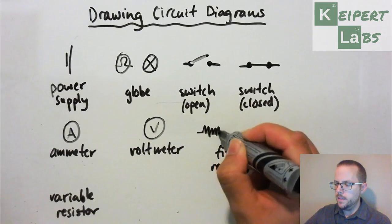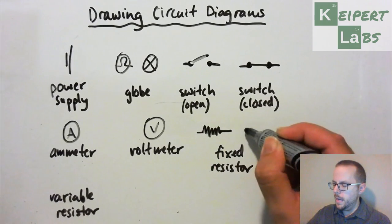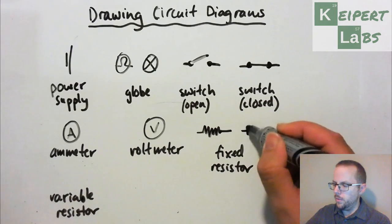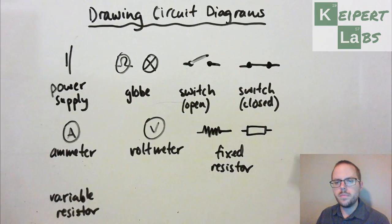And so what we can do is that there are some resistors we call fixed, and that look like this, or they can look like a little rectangular box, so that they have a certain amount of resistance to them.